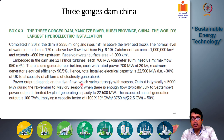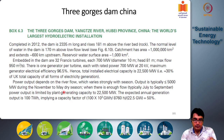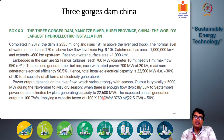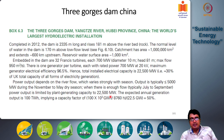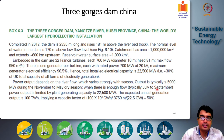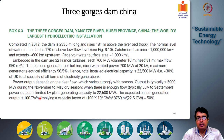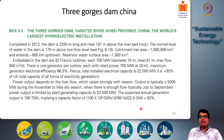One problem is that the river is highly seasonal. Output is typically less than 5,000 megawatts during the dry season from November to May, but during the wet season from July to September, the output can reach the full generating capacity of 22,500 megawatts. The expected annual generation is approximately 1,000 terawatt-hours, implying a capacity factor of around 50 percent.